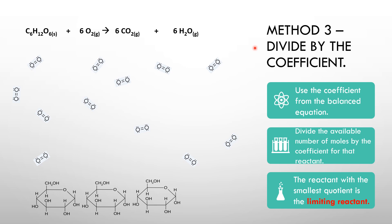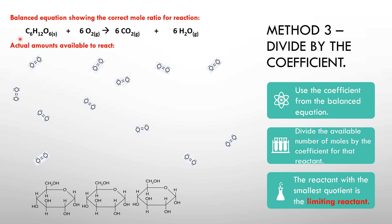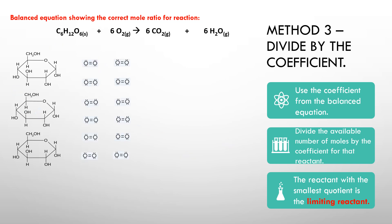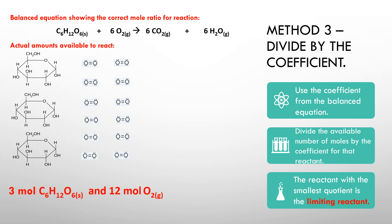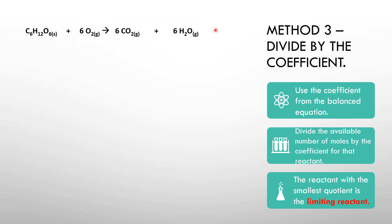So O₂ must be the limiting reactant. Here's Method 3, which I call 'divide by the coefficient.' This is my favorite method, though I've provided all three in case one of the others makes more sense to you. The idea is to take the coefficient from the balanced equation for each reactant and divide the available number of moles by that coefficient. For glucose, divide by one; for oxygen, divide by six.